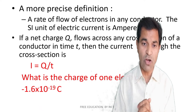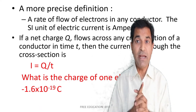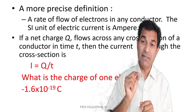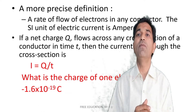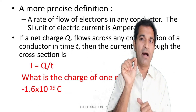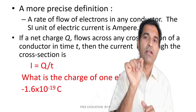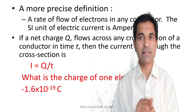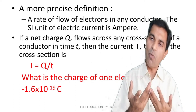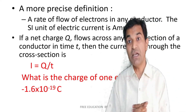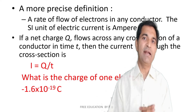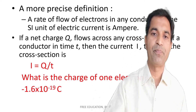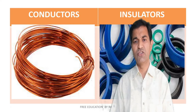The charge of one electron is minus 1.6 × 10⁻¹⁹ coulomb — a very small amount of charge. The charge of one proton is plus 1.6 × 10⁻¹⁹ coulomb, which is the opposite.